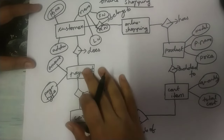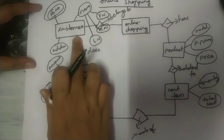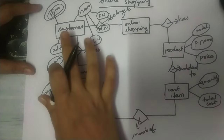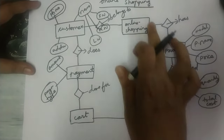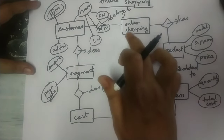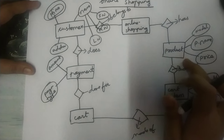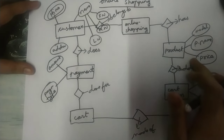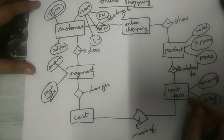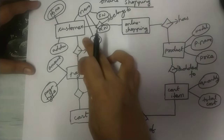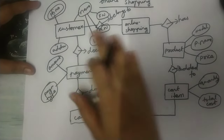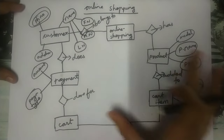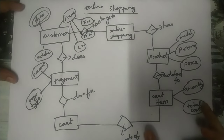Now let us see the flow. The customer belongs to online shopping — the customer wants to do shopping online. In online shopping there are many various products. The customer is choosing the product that he or she wants and putting it as a cart item. Then the customer is paying the amount for that item. So this is the flow, and this is the ER diagram for online shopping.